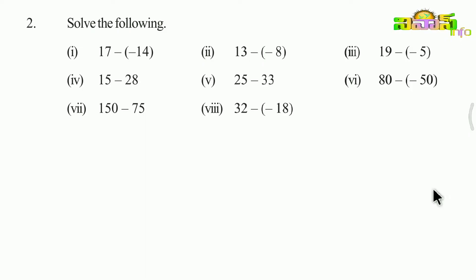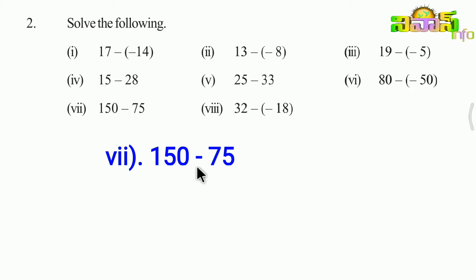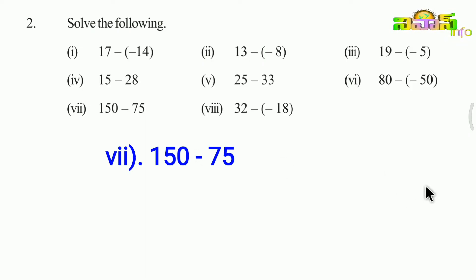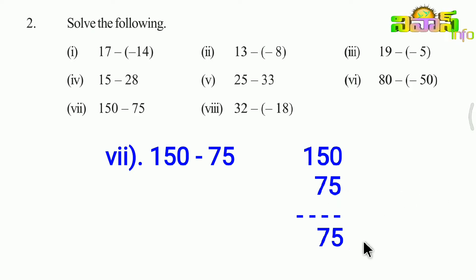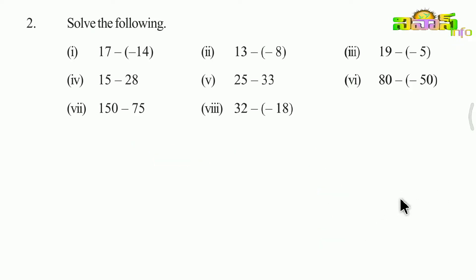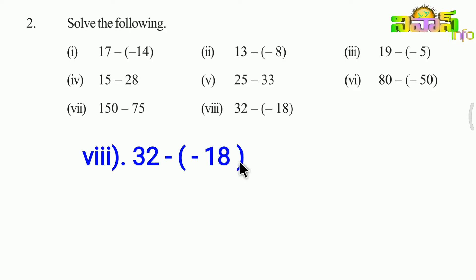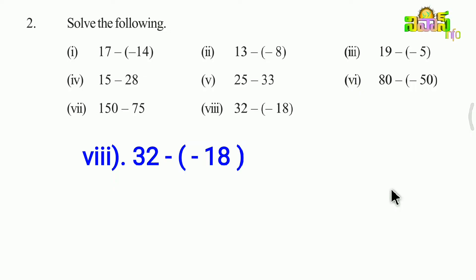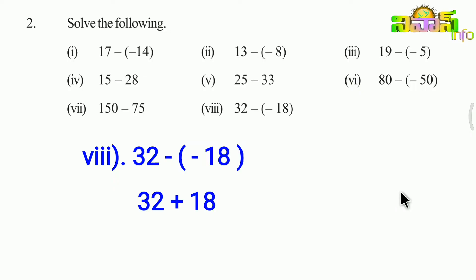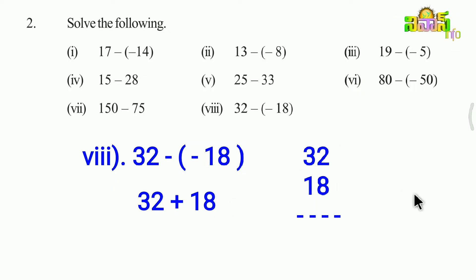Next, we have 150 minus 75. There is only a single symbol, so the answer is 75. Next, we have 32 minus minus 18. We have two symbols — minus times minus gives plus. So 32 plus 18, the total answer is 50.